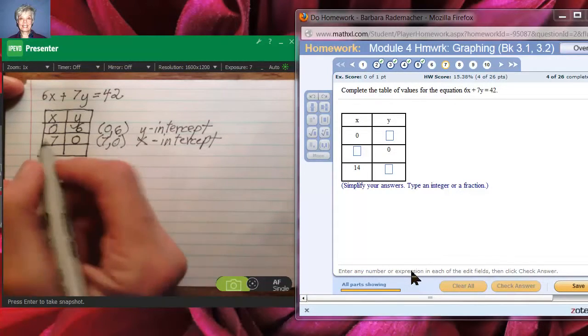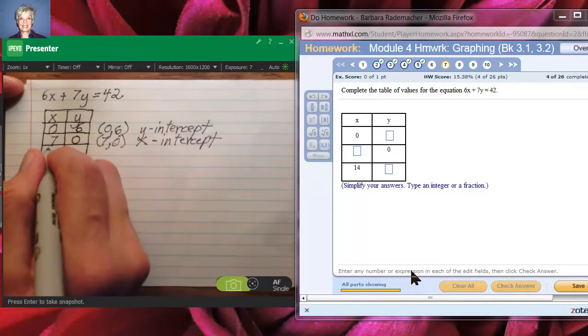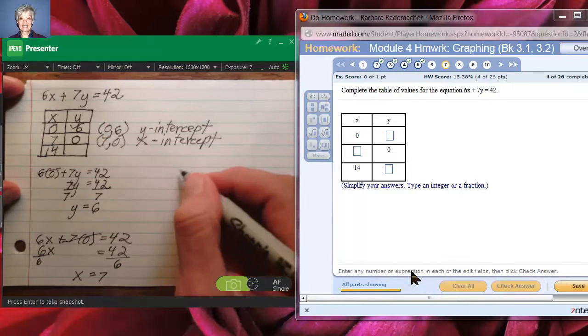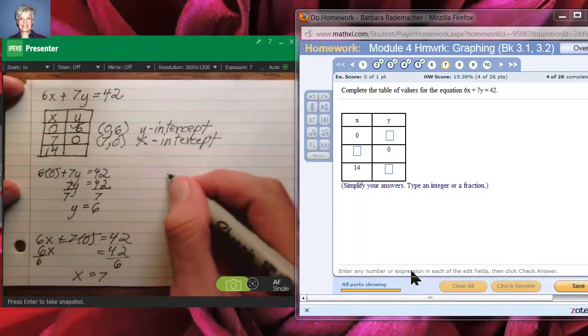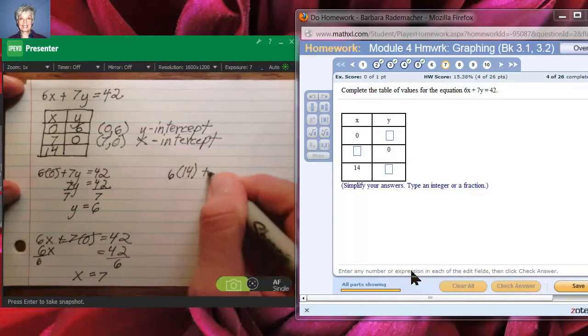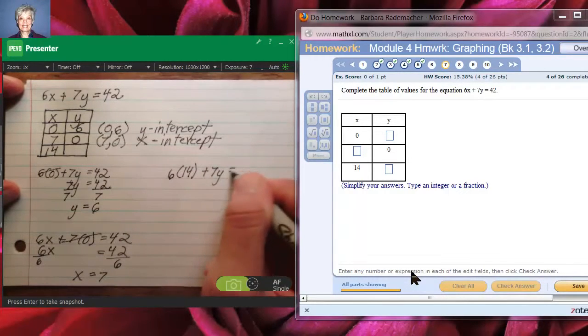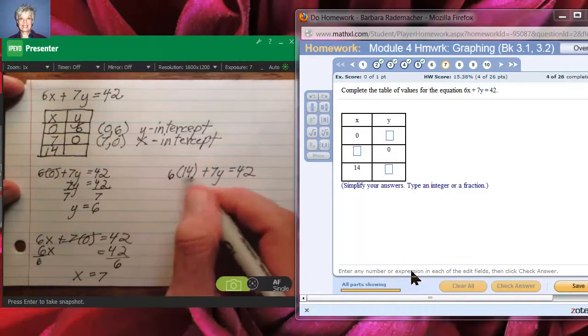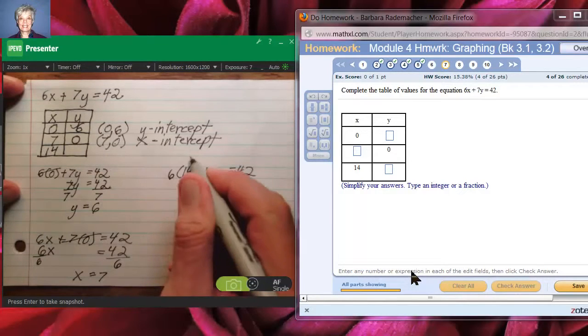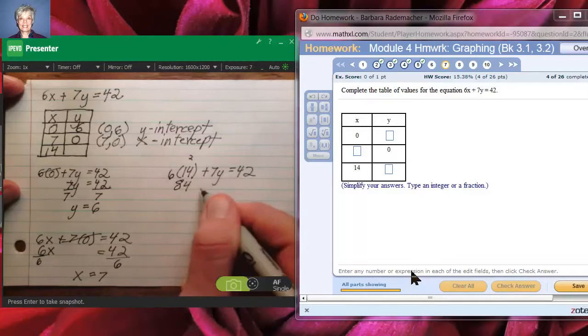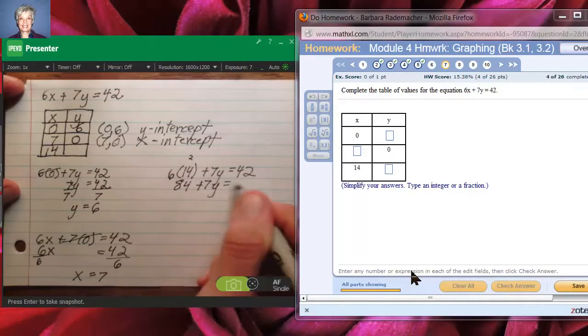The third point we're asked to find is one in which the x-coordinate is 14. So let's come over here, and we'll have 6 times 14 plus 7y equals 42. Now, 6 times 14, 6 times 4 is 24, carry the 2, 6 times 1 is 6, plus 2 is 8. We'll have 84 plus 7y equals 42.